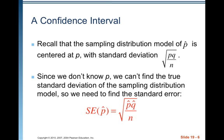This is the case most of the time. When we actually look at a set of data and get the p-hat value, most of the time we don't know what p is. We're trying to estimate the true population proportion based on what we see in our sample. Since we don't know p and we're trying to estimate it, we use our estimate p-hat to calculate our standard error: SE(p-hat) = square root of p-hat times q-hat over n.